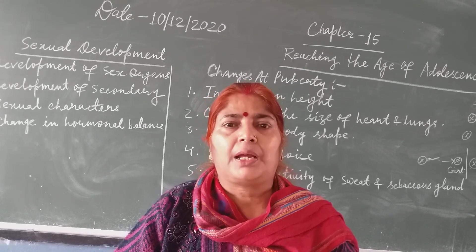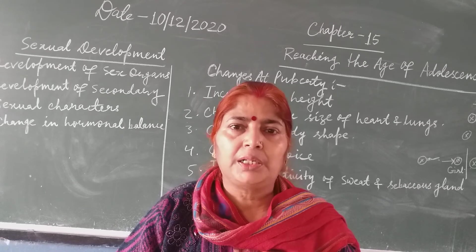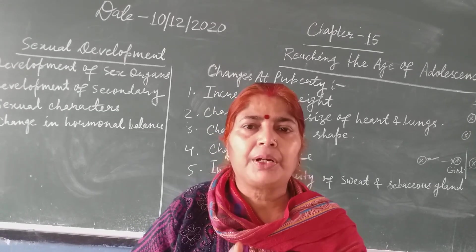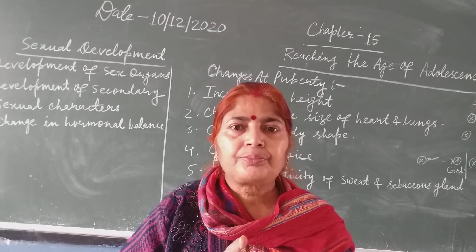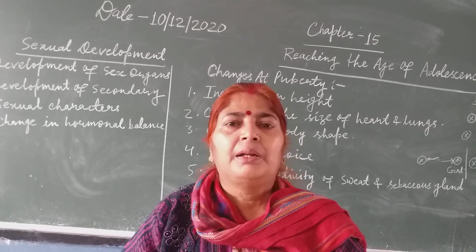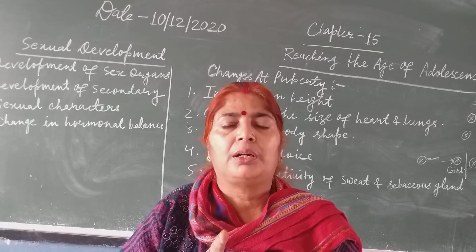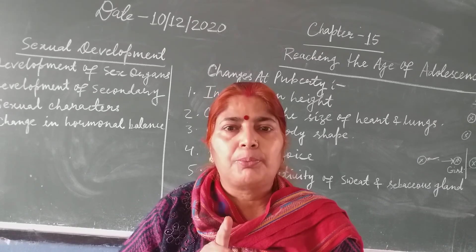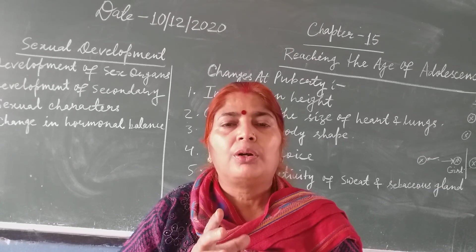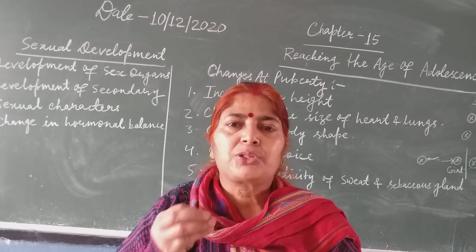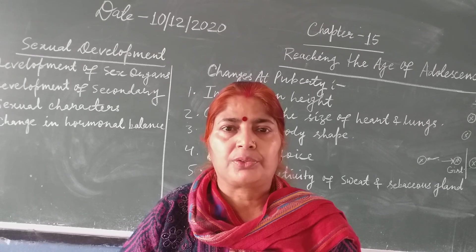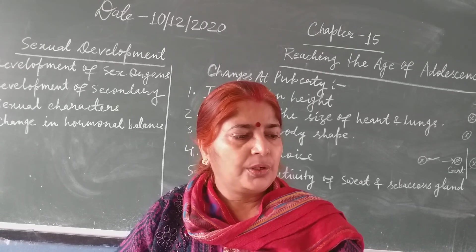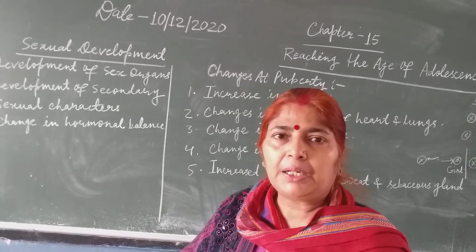The menstruation cycle is repeated every 28 days, which is why it is called a cycle. The first time a girl starts her menstruation cycle, it is called menarche. Around the age of 45 to 50 years, the menstruation stops in a woman, which is called menopause. This is all about the reproductive phase in the human body.